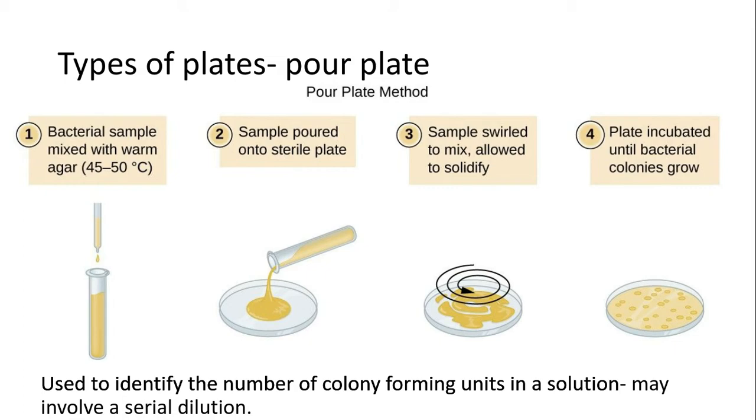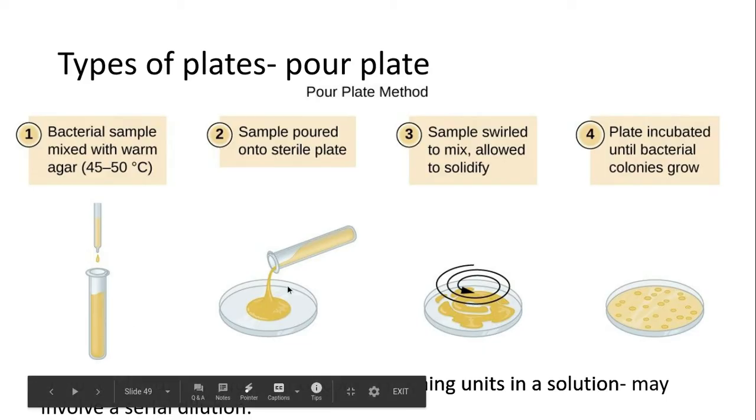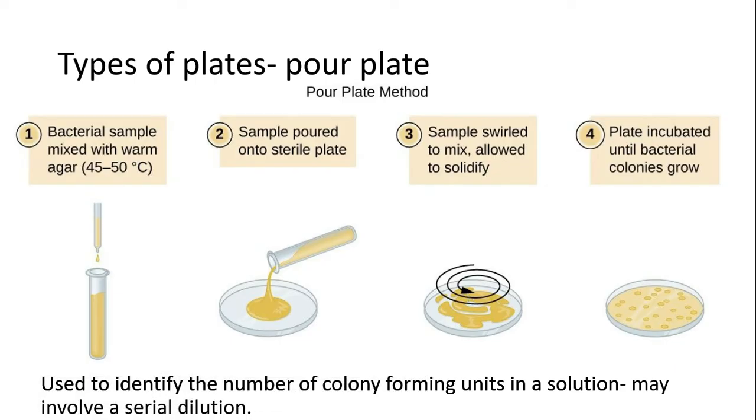Examples of culturing in the lab that you should be able to do for your PAG 7. There are different things you can do: the pour plate, streak plate, or lawn plate. This is an example of the pour plate. You would get a bacterial sample, pour it into a sterile plate, swirl it gently with the lid on, and then incubate it until the colonies grow.